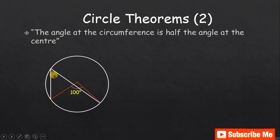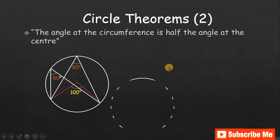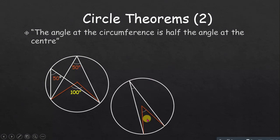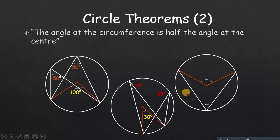It doesn't matter where the angle touches the circumference — as long as it extends from the same two endpoints, the angle at the circumference is half the angle at the center. For example, if the center angle is 100, the circumference angle is 50. If here is 15 degrees then the center angle will be 30 degrees, and if the center angle is 30 degrees, the circumference angle will be 15 degrees, because the center angle is twice the circumference angle.